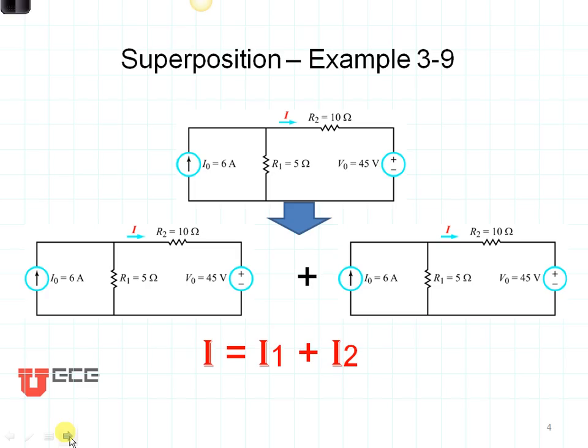Let me show you what I mean. Here's example 3.9 from your textbook. Let's say that we have two sources, IS1 and VS2, and then we want to find this current in the branch. The first thing we do is we set up our circuit so that we can analyze IS1, which means we have to make all the other sources go away. Convert the voltage source to a short circuit.